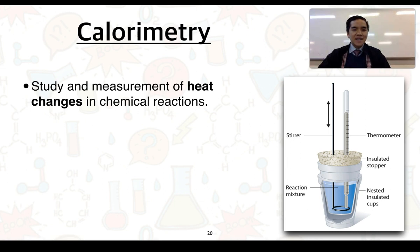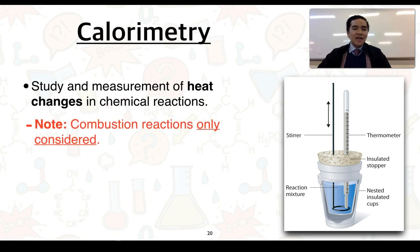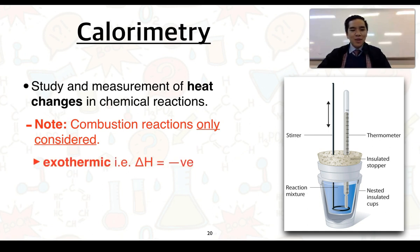Calorimetry is the study and measurement of heat changes in chemical reactions. We were introduced to this back in stage 1 chemistry in topic 4, looking at energy in reactions. Note that combustion reactions are the only ones that will be considered here, and we know that combustion reactions are all exothermic. Another way of saying that is that the ΔH value or the enthalpy change is always going to be negative.